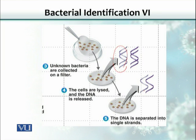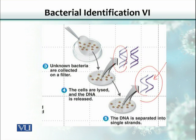Then we put this filter into a hybridization oven, where we increase the temperature and add some chemicals in order to denature the double-stranded DNA into single-stranded DNA. Then we add our probe. If the colonies are Salmonella, our probe — which we add here — would bind to that specific DNA fragment.